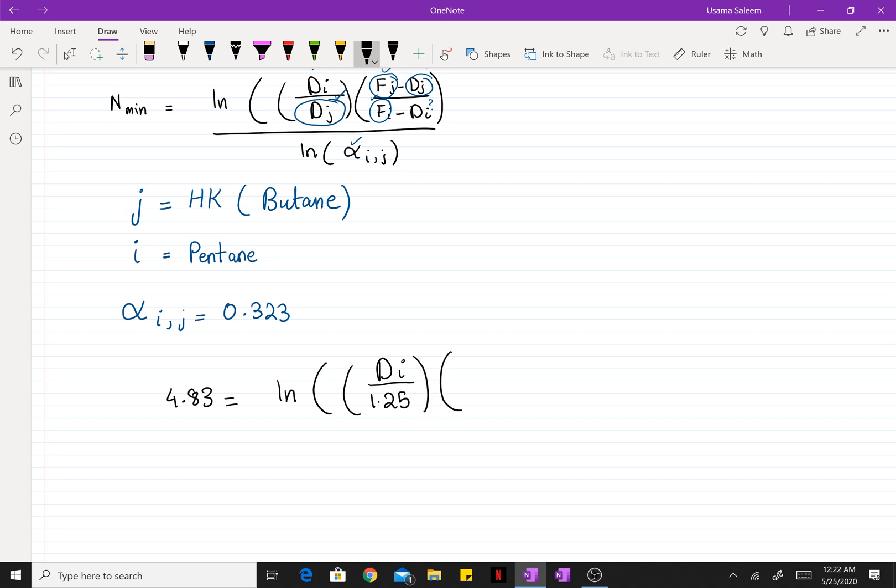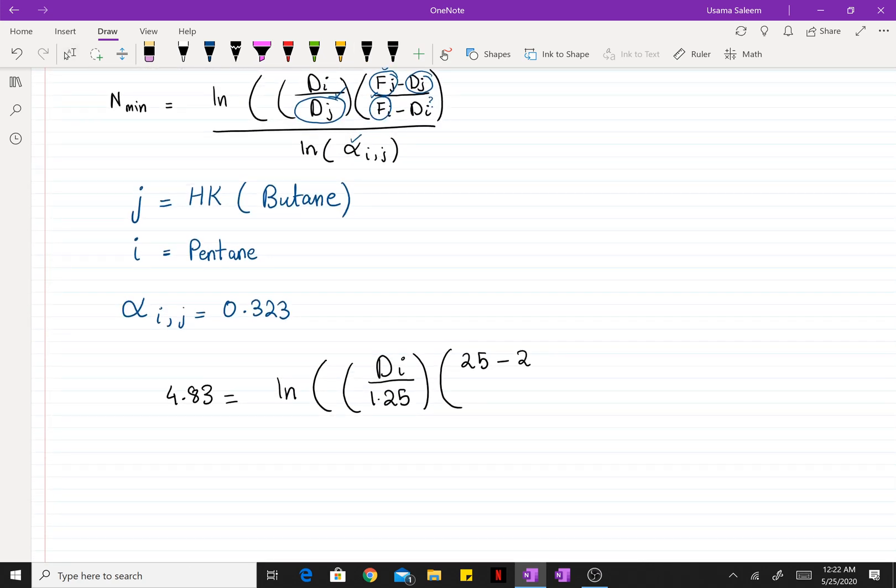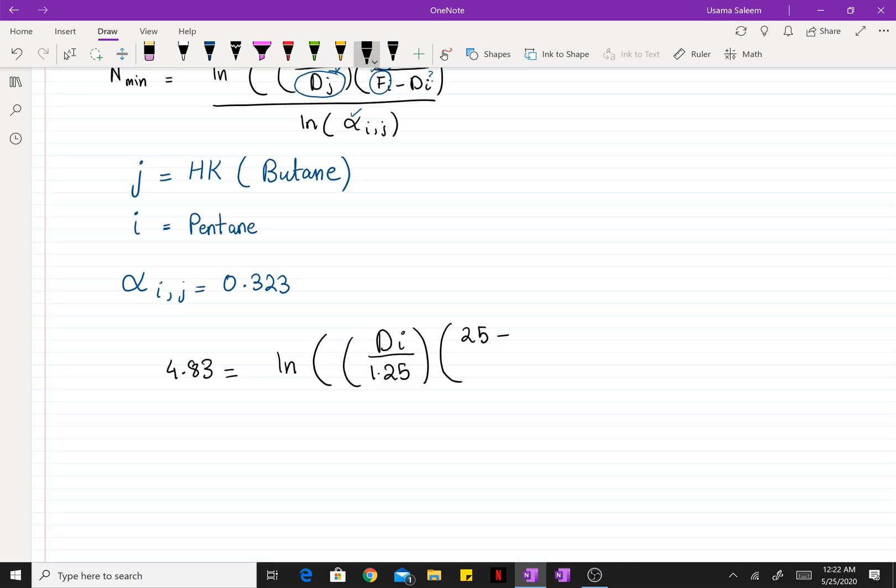Natural log of DI divided by DJ - our flow rate of the heavy key in the distillate was 1.25. And the flow rate - we had an equimolar feed, so the flow rate of the heavy key in the feed is just gonna be 25 moles. Minus DJ was 1.25 again, divided by 25 minus DI, divided by the natural log of 0.323.